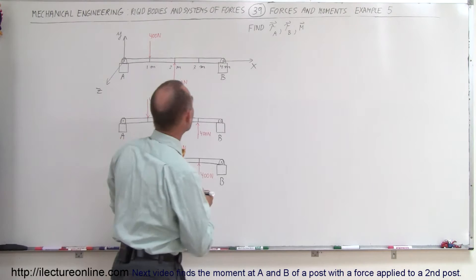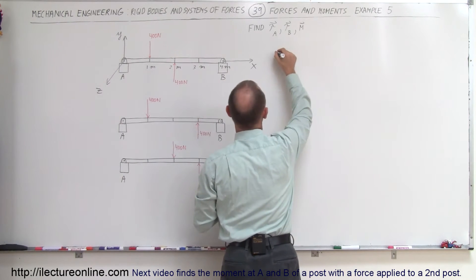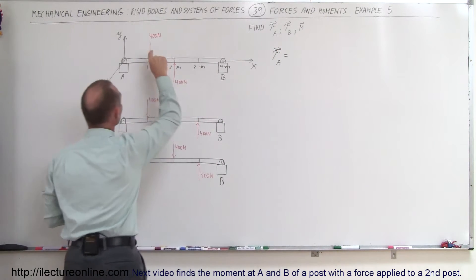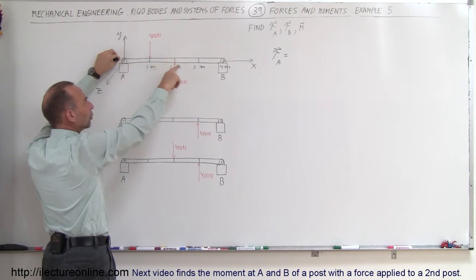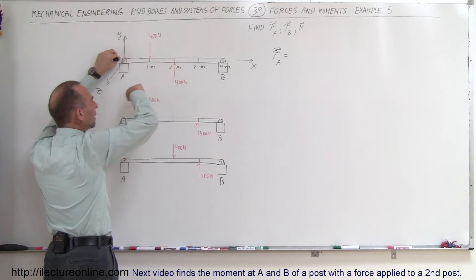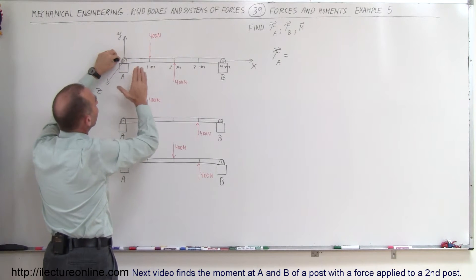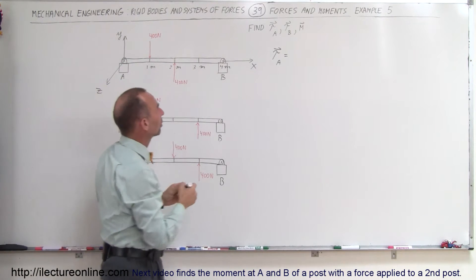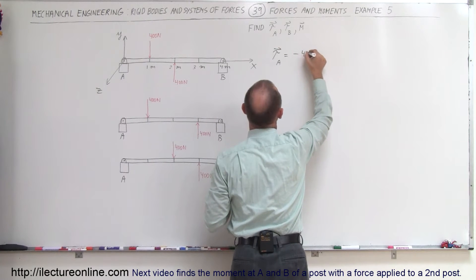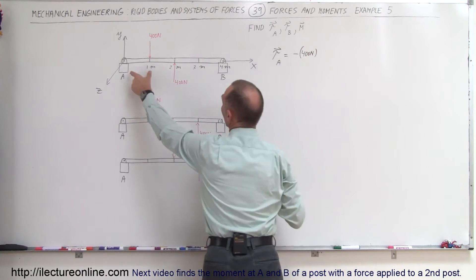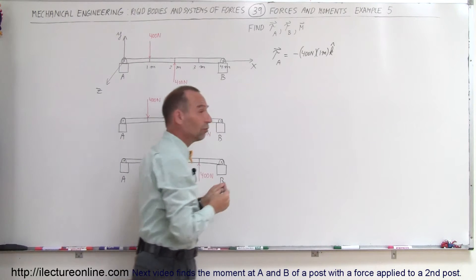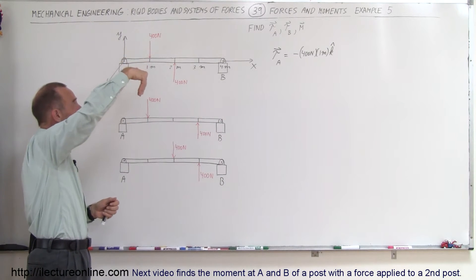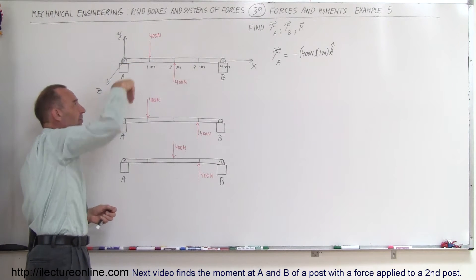Starting with the top beam, we're going to find the torque relative to A. The torque relative to A is equal to — we have a 400 Newton force which would cause the beam to rotate in a clockwise direction if there were no other forces. Clockwise motion would be a negative torque. So this would be minus 400 Newtons times a distance of one meter, and that would be in the negative Z direction. Notice that if you take your fingers and point them in the direction of the force, the torque would be in the negative Z direction.